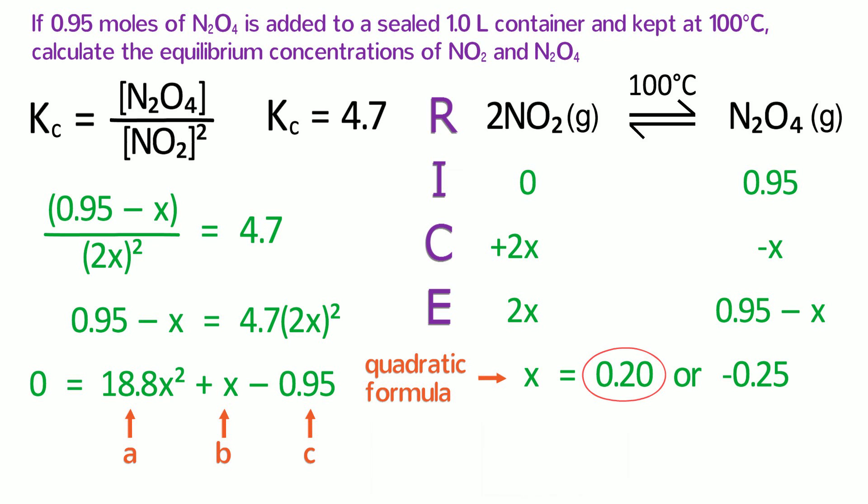Last of all, we plug this value of X back into our equilibrium values on the RICE table. The nitrogen dioxide molarity is 2 times 0.2, which is 0.4 molar. The dinitrogen tetroxide molarity is 0.95 minus 0.2, or 0.75 molar.